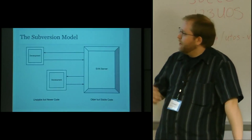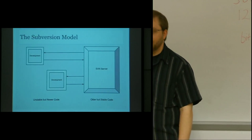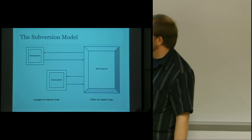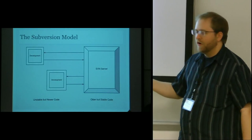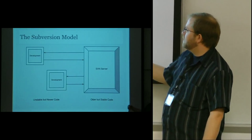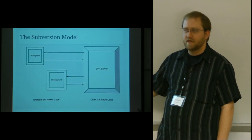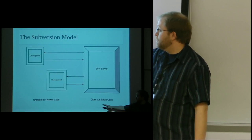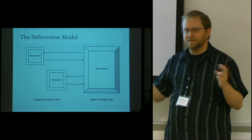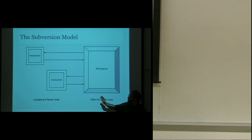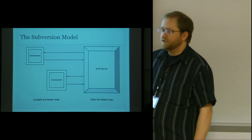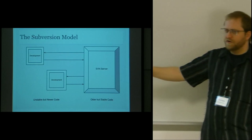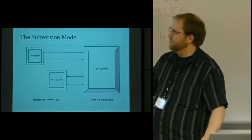Going back to the subversion model, when we used subversion we had the centralized repository. If anybody were to check out from the repository, they would get code that would hopefully be older but stable code — fingers crossed. Everybody doing their development on their machines has newer code until they check it back in, but you couldn't depend on it to be stable. So keeping in mind this idea of stable code and the age of the code, you have that kind of separation.